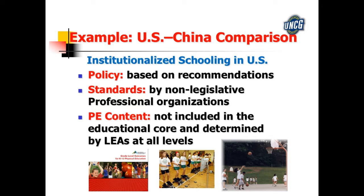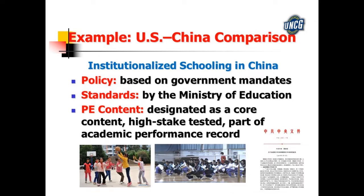Physical education content is not core content in schools here. But in China, policy is based on government mandates — everything is laid out in the law, so everybody has to do it. Standards are made by the Ministry of Education, and they have a centralized curriculum they push to every school. PE content is a high-stakes tested area; it is core content. If your child needs to move to the next level of education — from middle school to high school, or high school to college — they have to meet those standards and be successful in physical education.